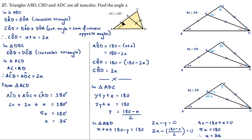In triangle ABD, angle BAD is equal to angle BDA, because the base angles of an isosceles triangle are equal — the angles opposite the equal sides must be equal. So if one base angle is X, the other is X as well. Now, angle CBD is equal to BAD plus BDA, because the exterior angle equals the sum of the interior opposite angles.